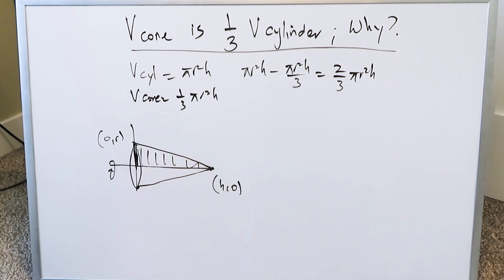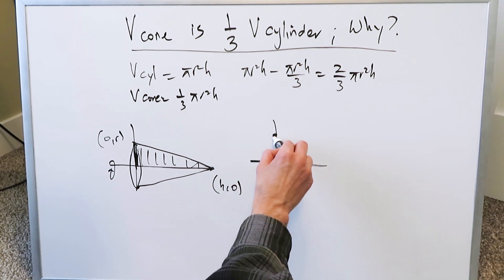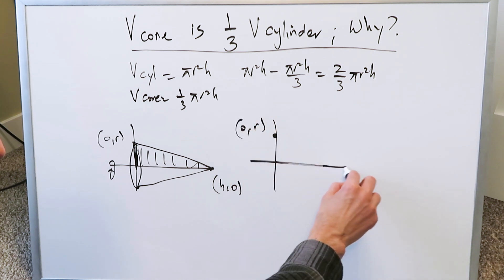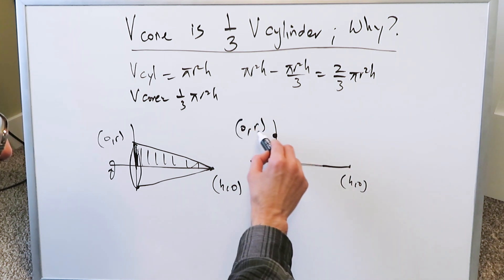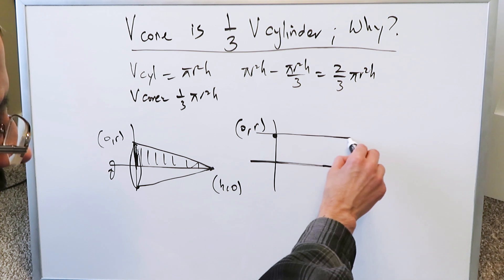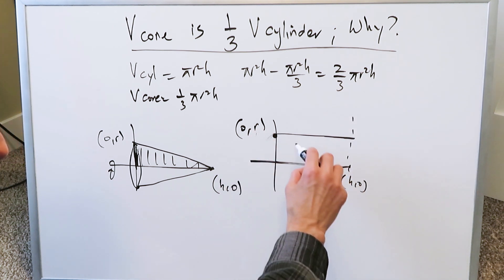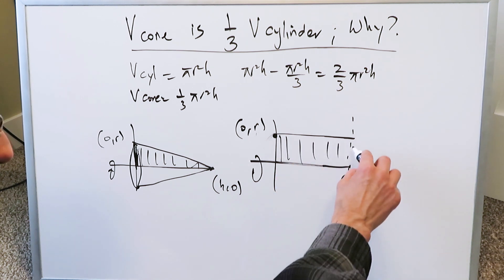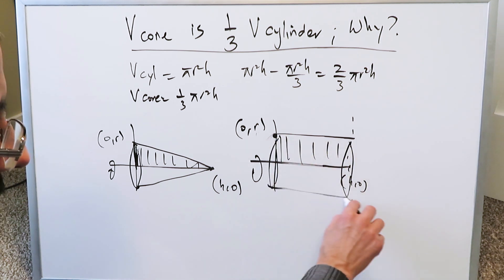You have the radius along the y-axis and the height on the x-axis. When you have a point at (0, r) and a point at (h, 0), you draw a line from that point up to an imaginary vertical line and rotate around the x-axis. The region below that horizontal line develops what is called a cylinder.